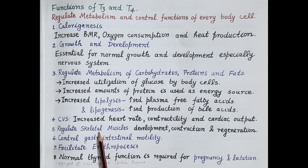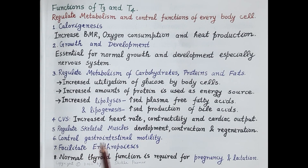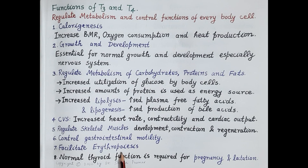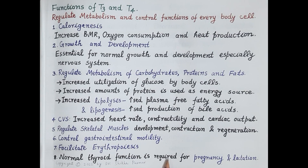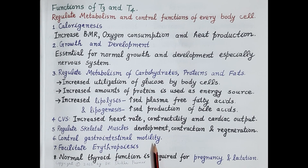T3 and T4 regulate development of skeletal muscles, their contraction and regeneration. They also regulate gastrointestinal motility — hypothyroidism leads to constipation while hyperthyroidism is associated with diarrhea. Thyroid hormones facilitate erythropoiesis (formation of red blood cells). Normal thyroid function is required for maintenance of pregnancy and lactation. Steady amounts of thyroid hormone are constantly released in the blood; however, more T3 and T4 are produced during pregnancy or cold weather when more energy is required.